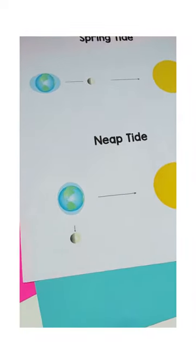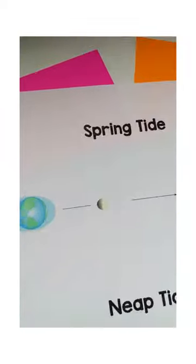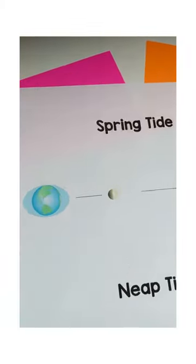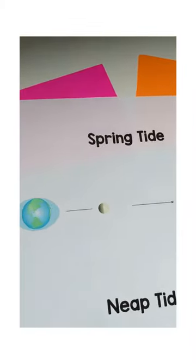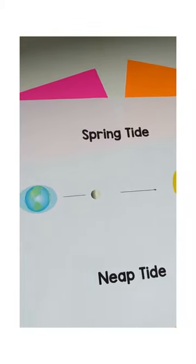And then a neap tide is at a right angle. So if they can just remember that S, spring, and straight go together — they've got it!